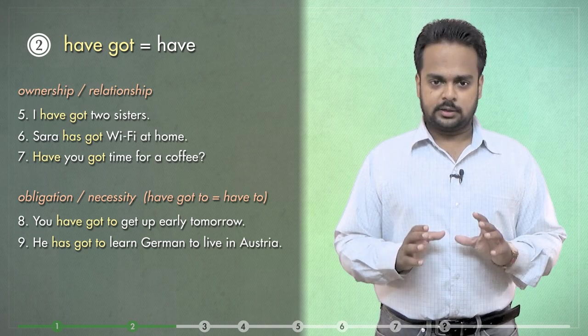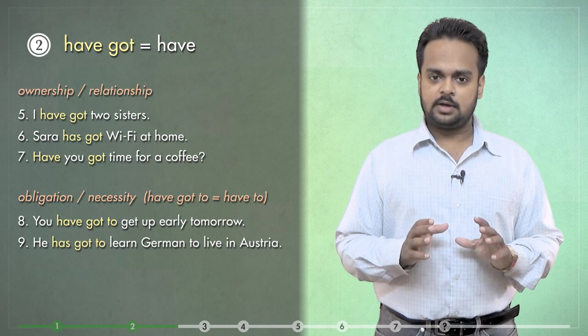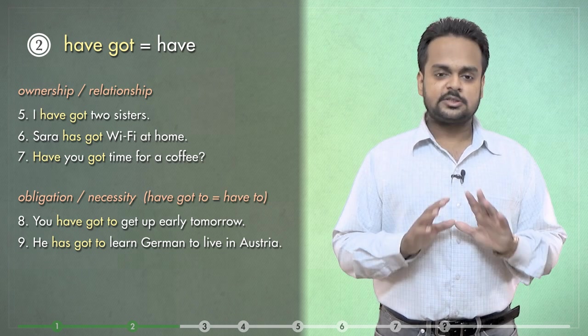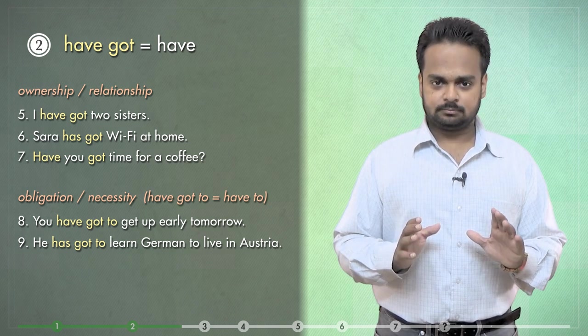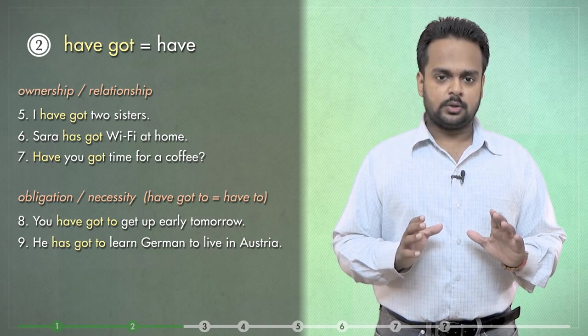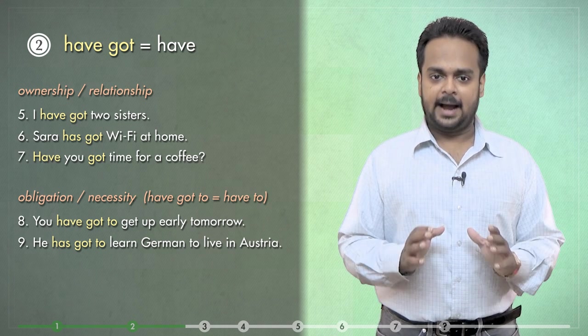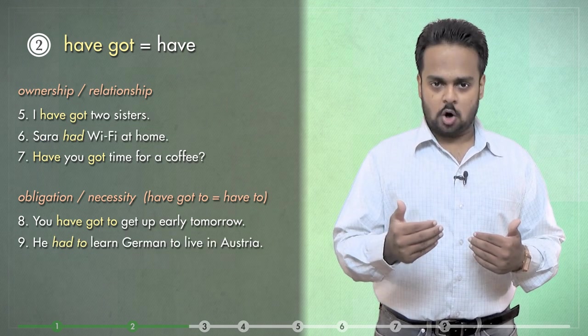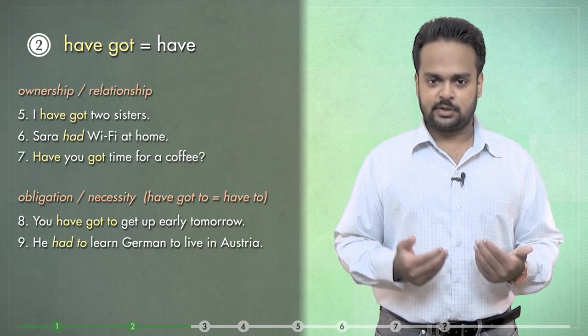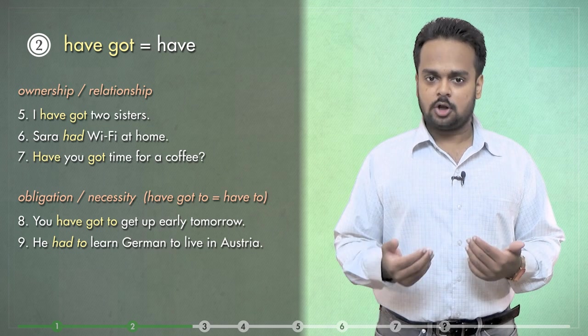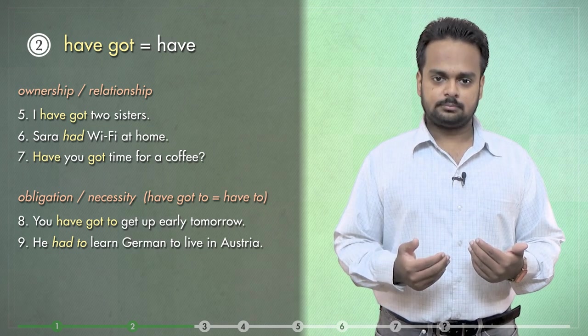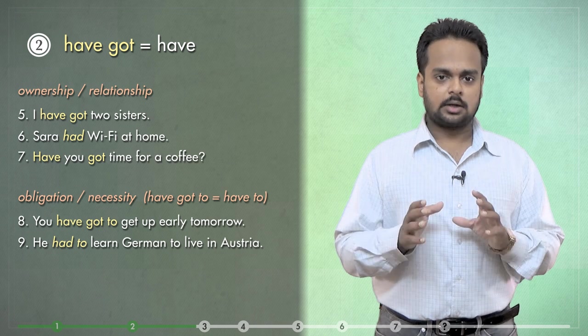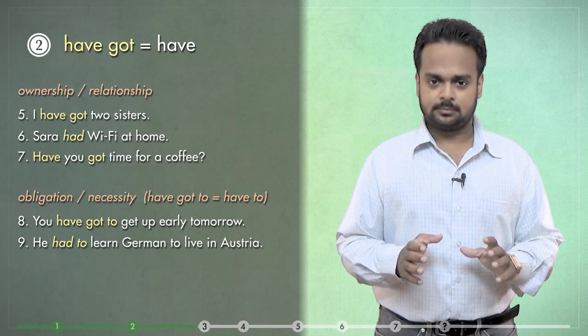But there is an important point here. When we use have got in these two ways, it does not have a past tense. To change these sentences to the past, just use had. For example, say, Sarah had Wi-Fi at home, which means she doesn't have it now. Or he had to learn German to live in Austria. Don't use had got to mean had. It's wrong. Remember that.